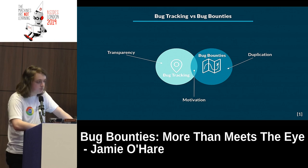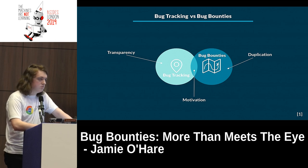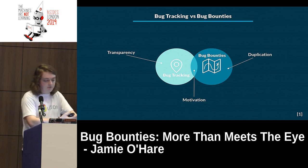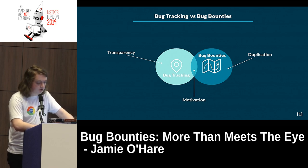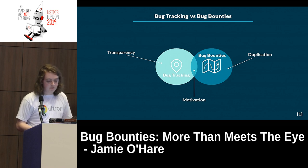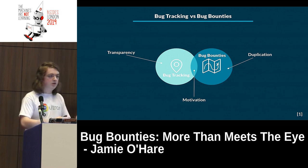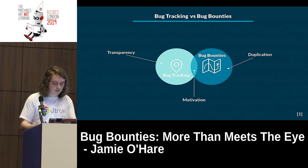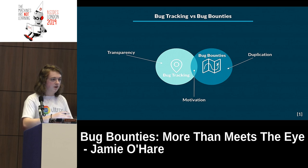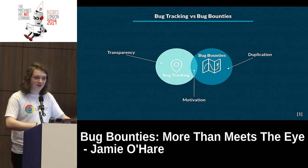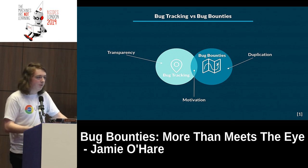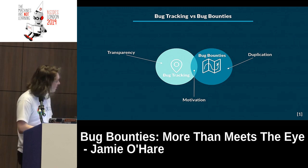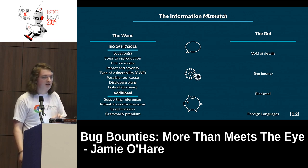There are two major differences, starting with transparency. Bug tracking systems you'll find on mailing lists and public forums — that helps reduce duplication. You don't see this on bug bounties because it's quite obvious they're security flaws; you don't want them public. That transparency has a knock-on effect with duplication. In bug tracking they actually want duplicates, but in bug bounties, duplicates are basically the 'I've got a boyfriend' of bug bounty reporting — a really hard rejection.